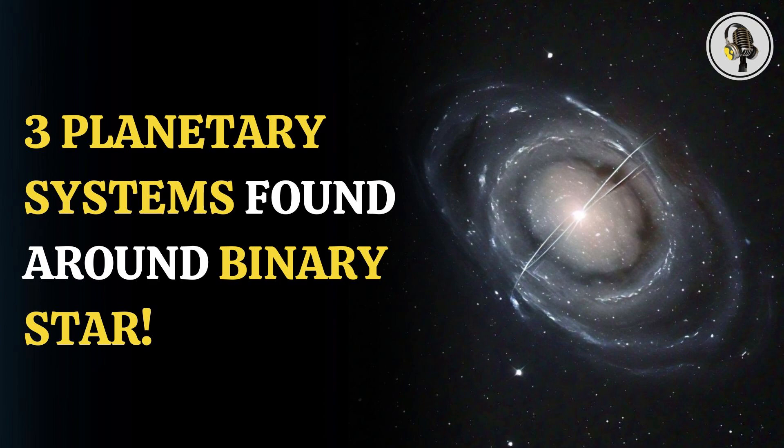Scientists have identified the formation of three planetary systems around a binary star system called SVS-13. Located 980 light-years away, the binary star system and the complex structures of dust around it are shedding light on how planetary systems are born in these fascinating environments.